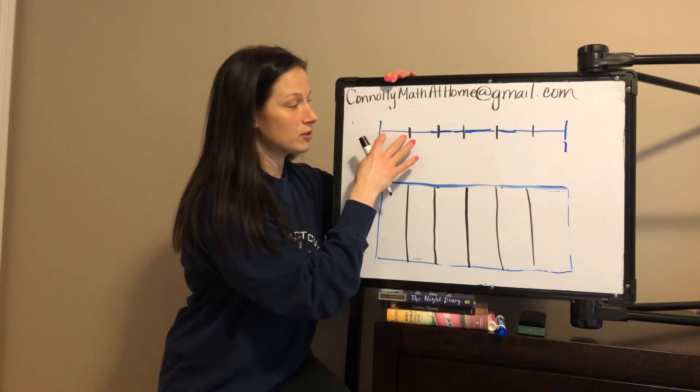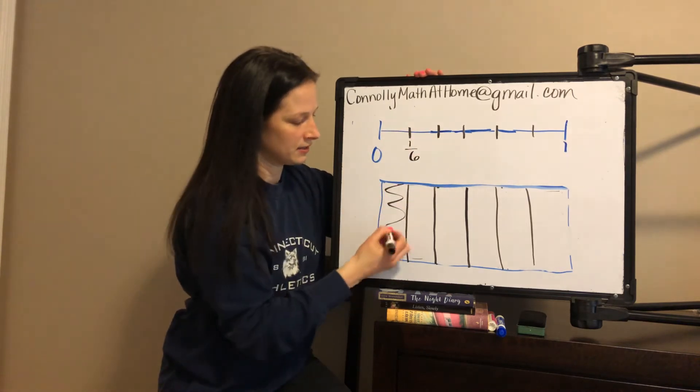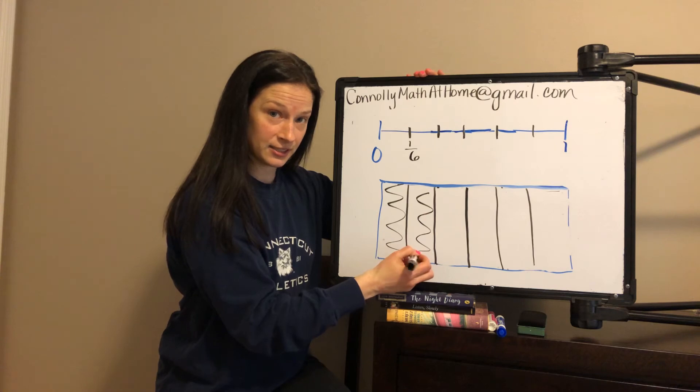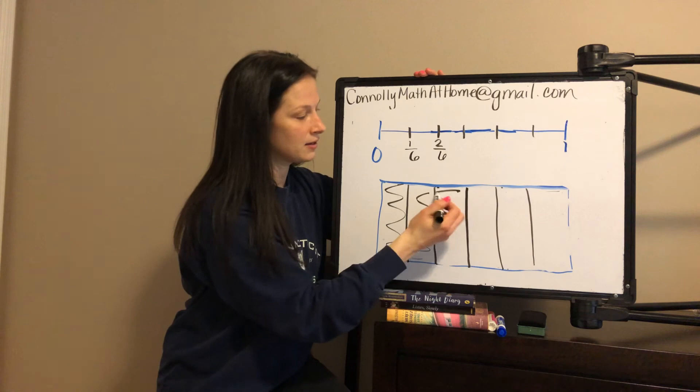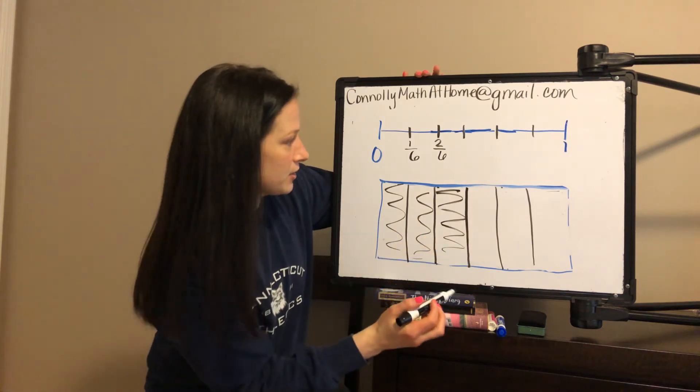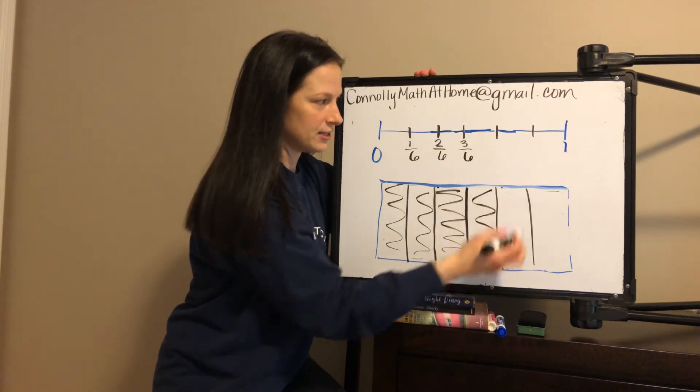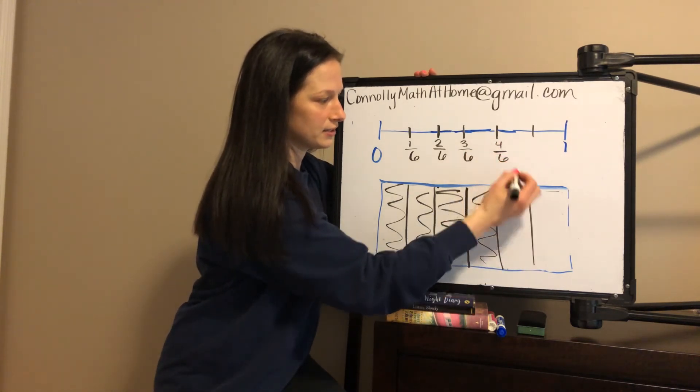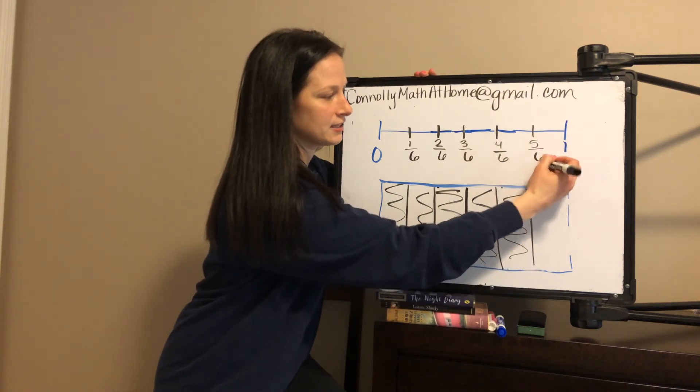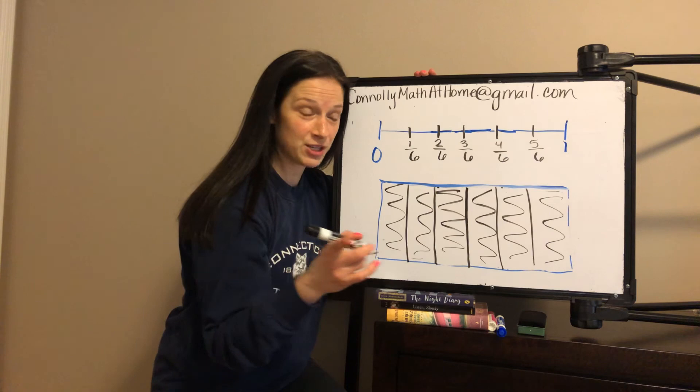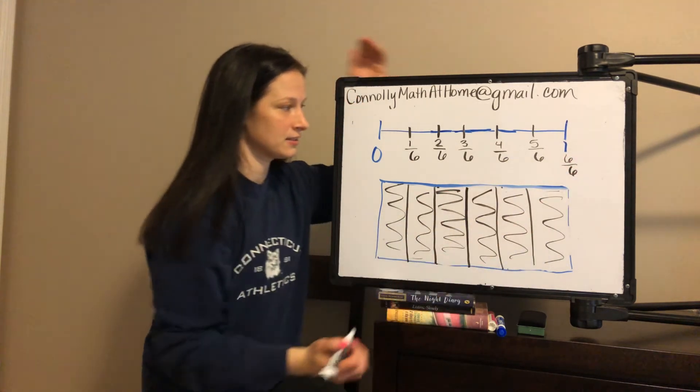Each part is going to stand for one sixth. One sixth plus another sixth. If I walk another sixth of a mile, I'm at two sixths. If I walk another sixth of a mile, I'm at three sixths. Another sixth, I'm at four sixths. Another, I'm at five sixths. And another. How much is a whole? Six sixths.